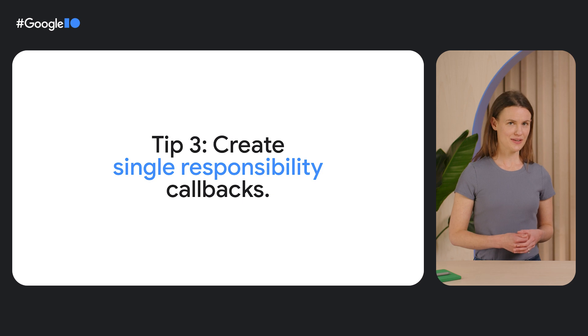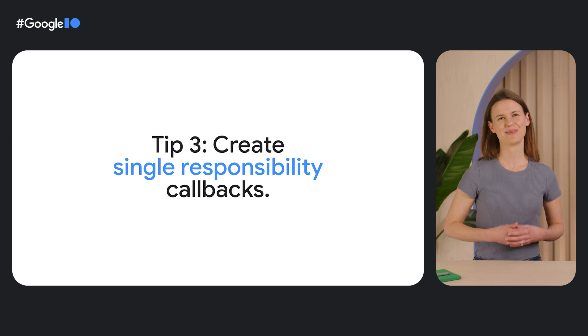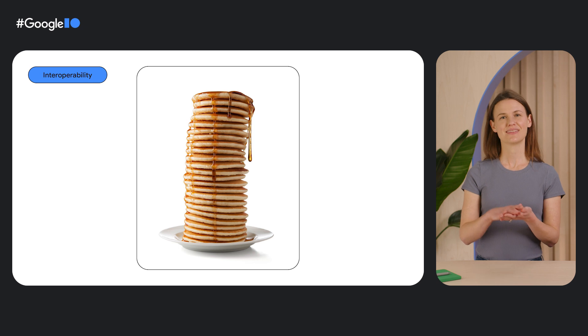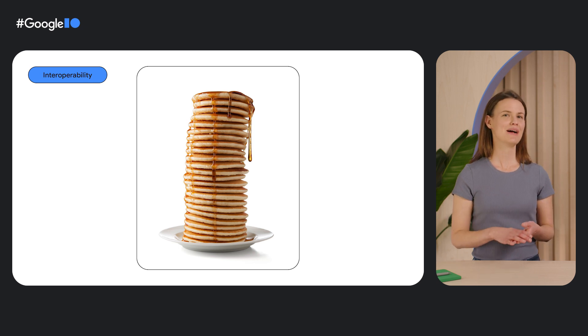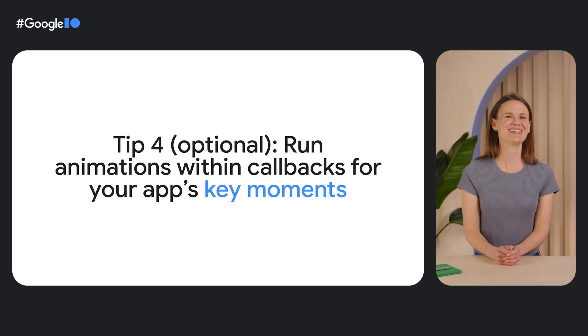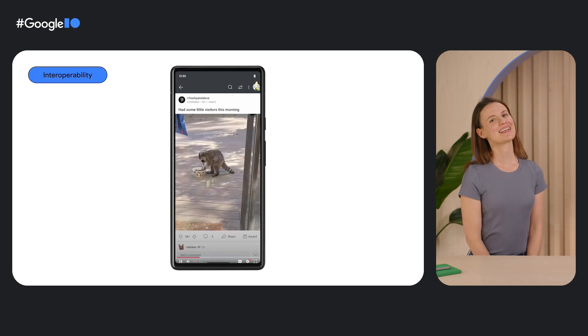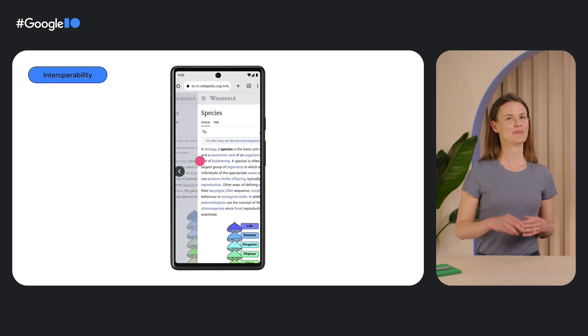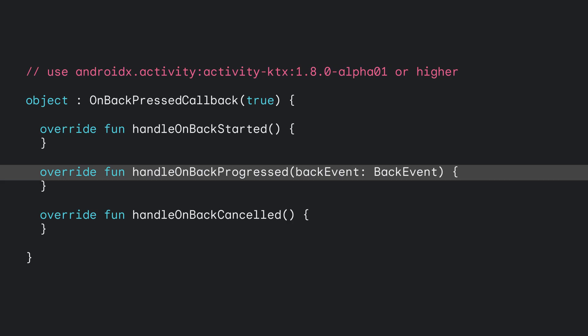Third, create single responsibility callbacks — one callback per animation or functionality. This is possible because you can create multiple callbacks. The callbacks are added to a stack, and the last added enabled callback will handle the next back gesture. Last, on Android 14, you can run animations within callbacks for your app's key moments. A key moment Reddit is prototyping is collapsing the post as we swipe back to the feed. Google Chrome is also prototyping previewing the previous web page as we swipe back. This is possible because of OnBackPressedCallback's new methods, including handleOnBackProgressed. The back event determines the edge the user is swiping from and the progress of the back gesture as the user swipes back.